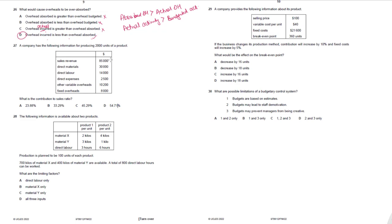Question 27. A company produces 2,000 units. Sales = $85,000, total variable costs = $56,700. Contribution to sales ratio = (Sales − Variable costs) ÷ Sales × 100 = ($85,000 − $56,700) ÷ $85,000 × 100. Answer: 27B.